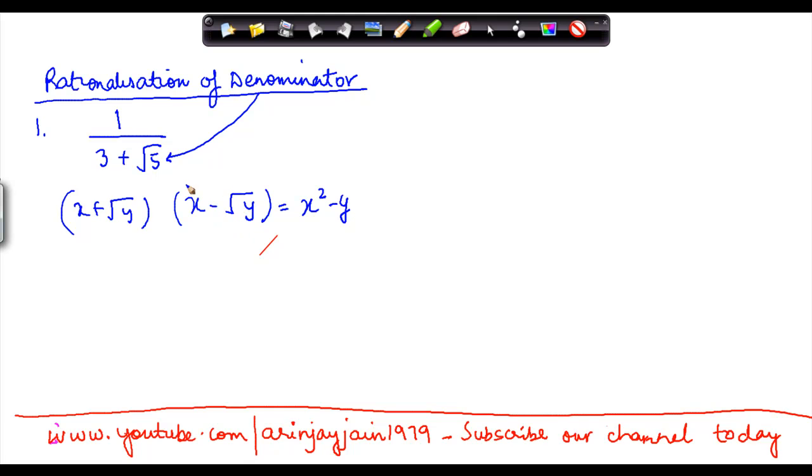Now in this particular case what do I have here? What I have here is something which is in the nature of x and y. So if I were to equate this denominator with something like x plus y, what do I get here? Let's see.